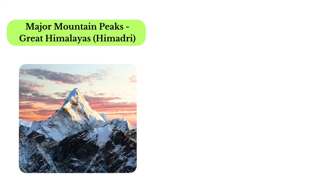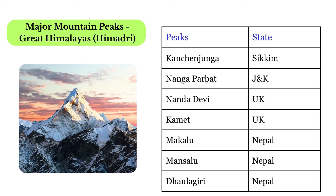Major mountain peaks of the Great Himalayas or Himadri: Kanchenjunga is in Sikkim; Nanga Parbat is in Jammu and Kashmir; Nanda Devi is in Uttarakhand; Kamet is in Uttarakhand; Makalu is in Nepal; Manaslu is in Nepal; and Dhaulagiri is in Nepal.